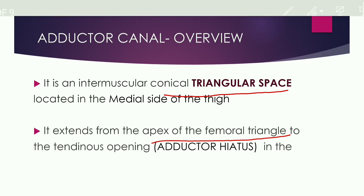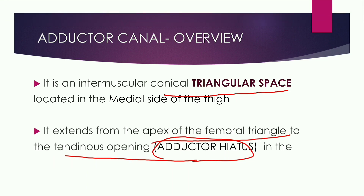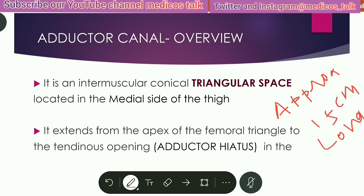It extends from the apex of the femoral triangle to the tendinous opening, also known as the Adductor Hiatus, in the Adductor Magnus muscle. The length of the Adductor Canal is approximately 15 centimeters long, from the apex of the femoral triangle to the tendinous opening in the Adductor Magnus.